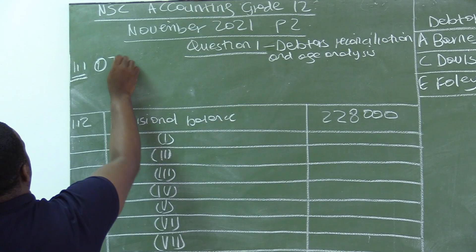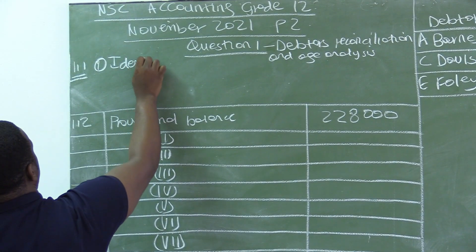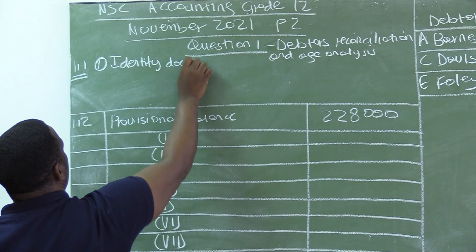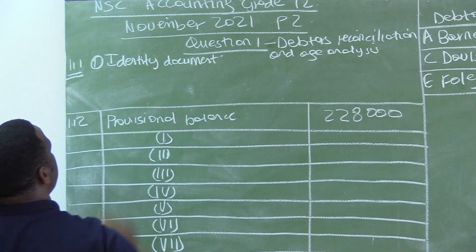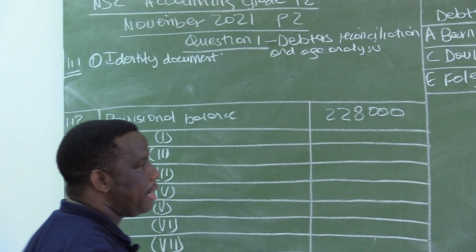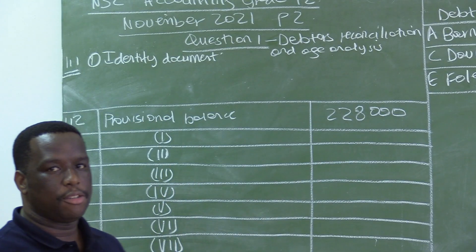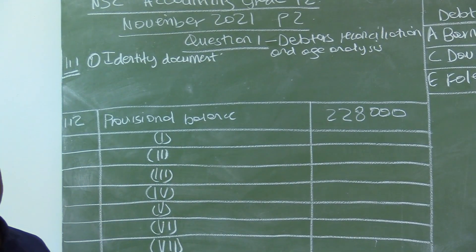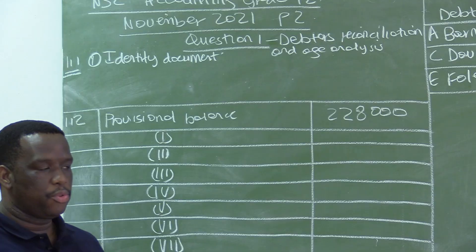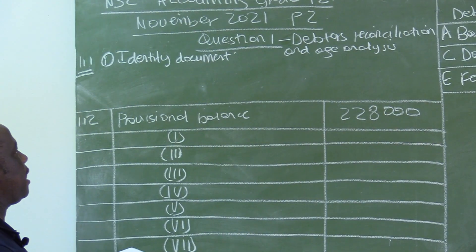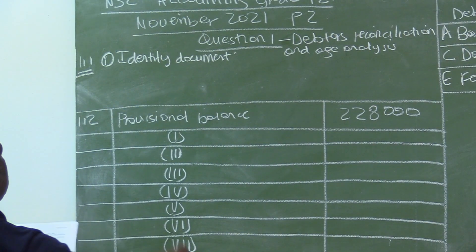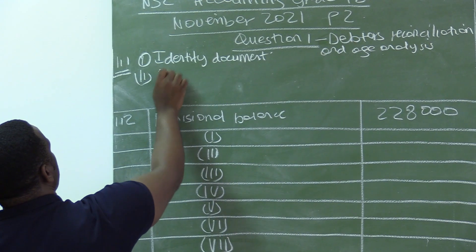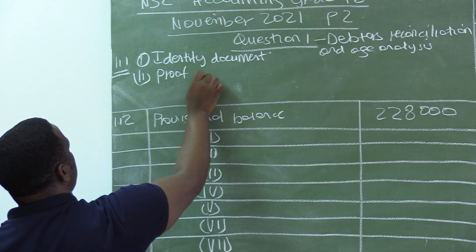Maybe the first document will be your identity document. We need to know that the name you are giving us is correct and reflected in your identity document, because we want to sell goods on credit to you. We also need to check affordability — are you going to be able to pay us back? So we also need proof of income.